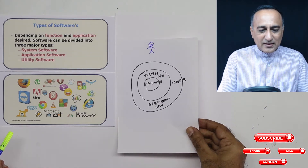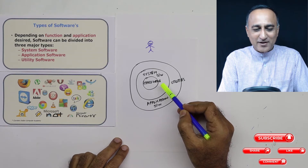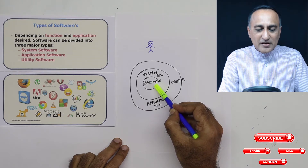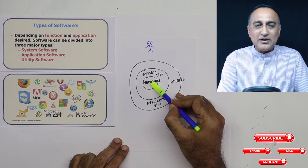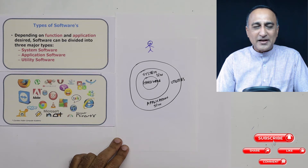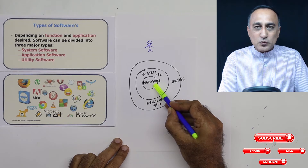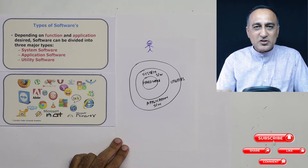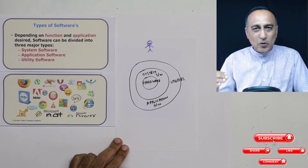The best way to understand these three groups of software is to look at this diagram. Let's say this is your hardware. If you have written a library management software, that is an application software — it cannot directly talk to the hardware. For example, if you're reading records of books purchased, you can't use your program to store data directly onto the hard disk, because your program doesn't have the instructions to deal with saving data on that hard disk.